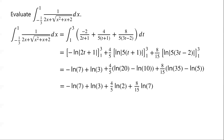So the final answer is ln 3 plus (4/5) ln 2 minus (7/15) ln 7.